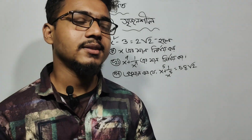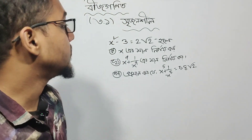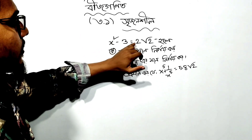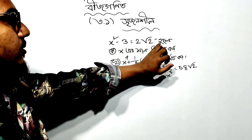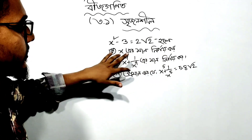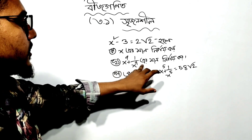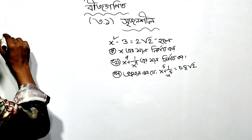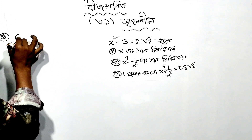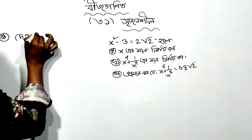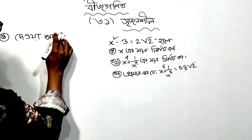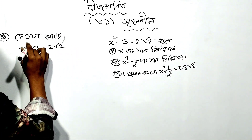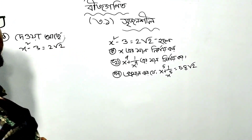Assalamualaikum wa rahmatullah. We have x to the power 4 plus x to the power 4 is exactly 2x to the power 4, and x into 4 is exactly 3x. Now, 2x squared minus 3 equals root 2. This is the way to find out that the expression is separated by conservation.